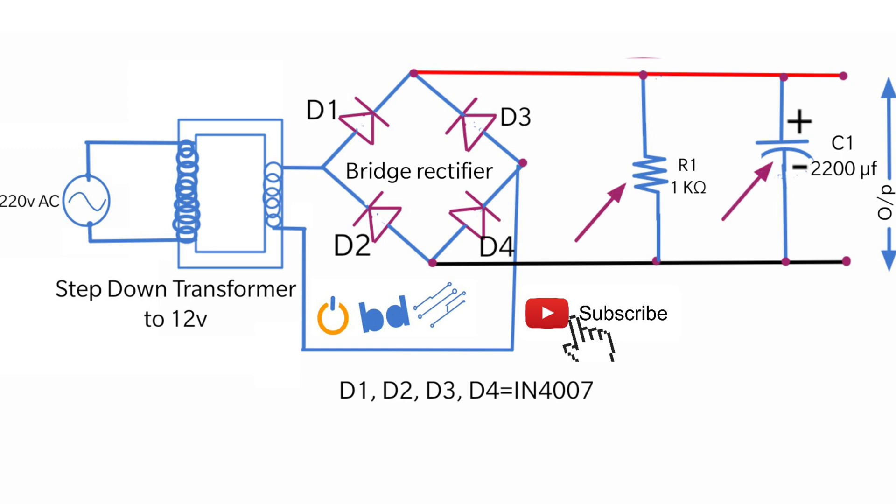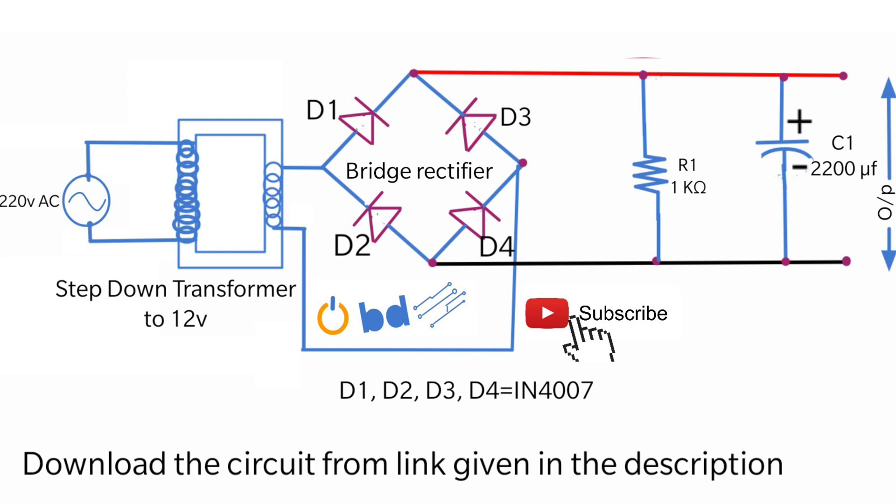Here the capacitor and resistor are used to remove the ripples and smooth the output. You can download the circuit from the link given in the description.